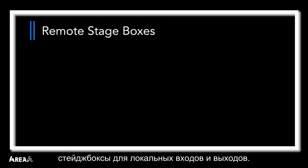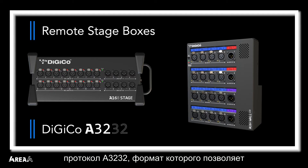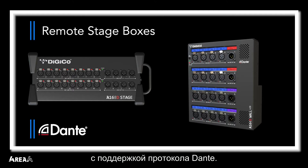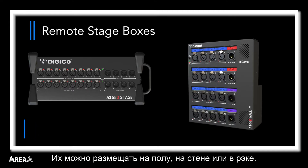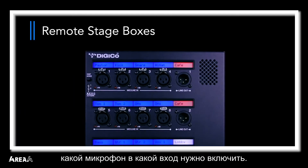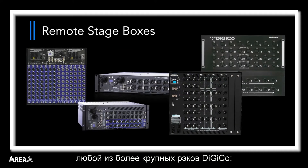You'll probably need additional remote I/O stage boxes, and there are plenty of options. Developed specifically for the Fourier 4, we have the A168 stage and A164 wall boxes. The standard version uses the A3232 protocol, a Digico audio format that allows for 32 channels of audio bi-directionally down a single CAT-IV cable. We also offer the A168D and the A164D, which are Dante versions of the same stage boxes. Whichever version you choose, they are floor, rack, or wall mountable. The A164 also has an LCD scribble strip, so you can immediately see what mics you need to plug in where. If you need more I/O, the Fourier 4 can also be connected to any of our larger Digico racks — the modular SD rack and SD mini racks, the D2 rack, or the D-Rack.